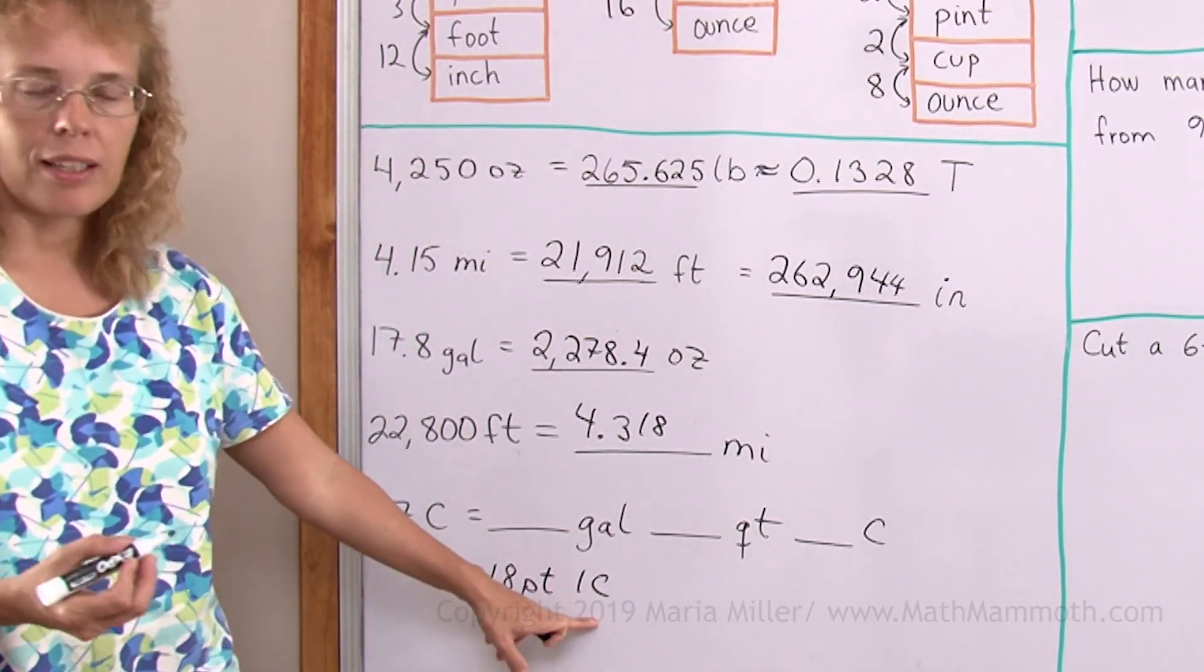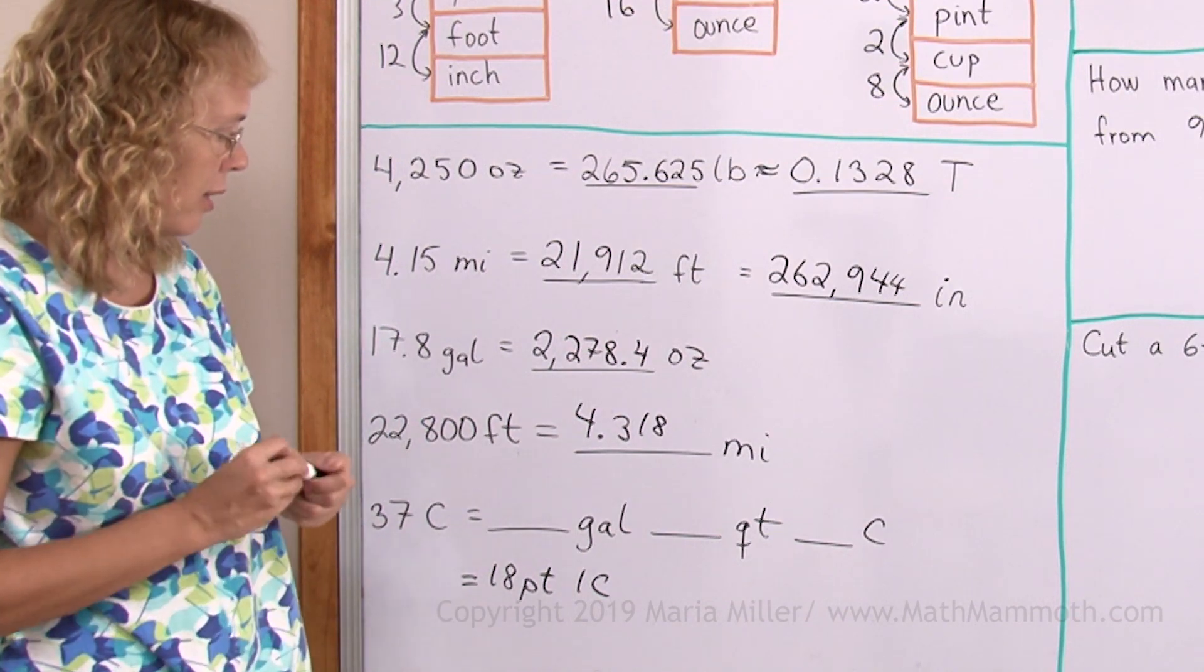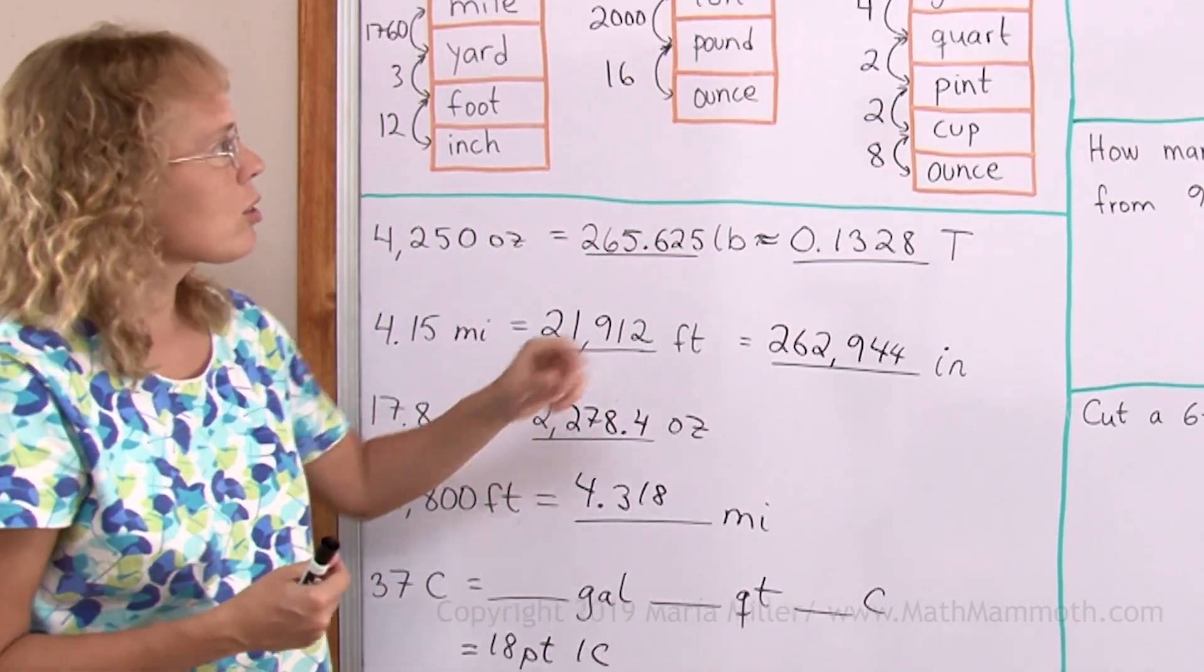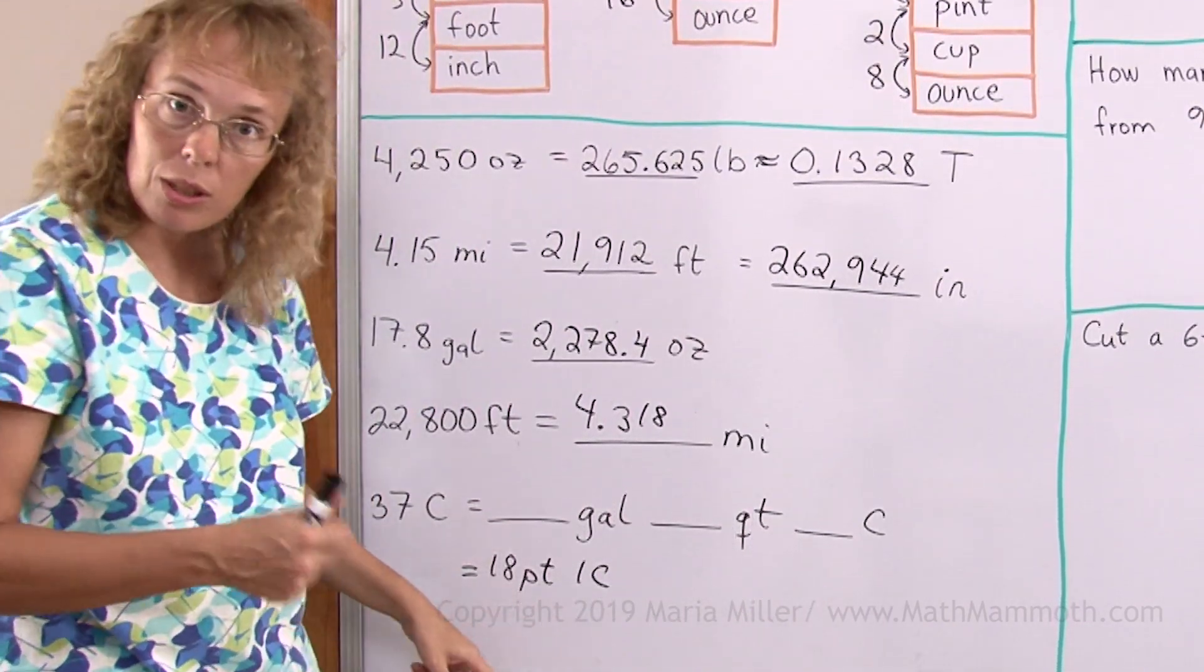I need to sort of keep track of my remainders here when I divide. So many pints. And now that into quarts. There's 2 pints in each quart. So this would make exactly 9 quarts, wouldn't it?